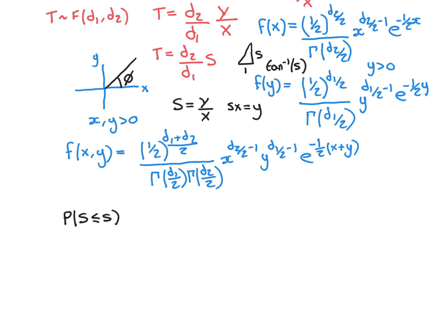Welcome back. We're trying to work out what the distribution for the random variable S is going to be, where S is the quotient of the random variable Y over the random variable X, where X and Y are independent and both chi-squared distributed — Y with d1 degrees of freedom and X with d2 degrees of freedom.